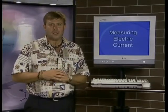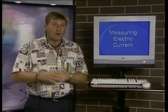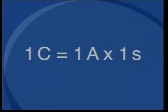We already know that electric current is the rate of flow of charge through a conductor. Charge is measured in coulombs and has the symbol capital C, while current is measured in amperes and has the symbol capital A. One coulomb is defined as the amount of charge that passes a point in a circuit when a steady current of one ampere is maintained for one second. This can be written as: one coulomb equals one ampere multiplied by one second. Note that unit symbols are always written with a number value and are different to the symbols that define quantities.